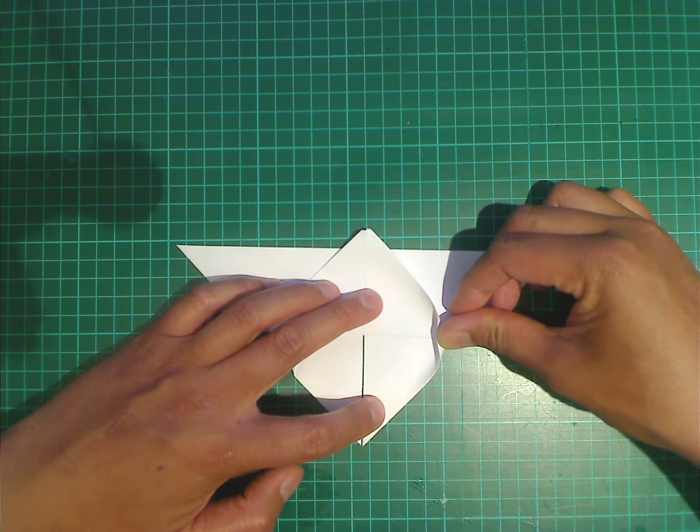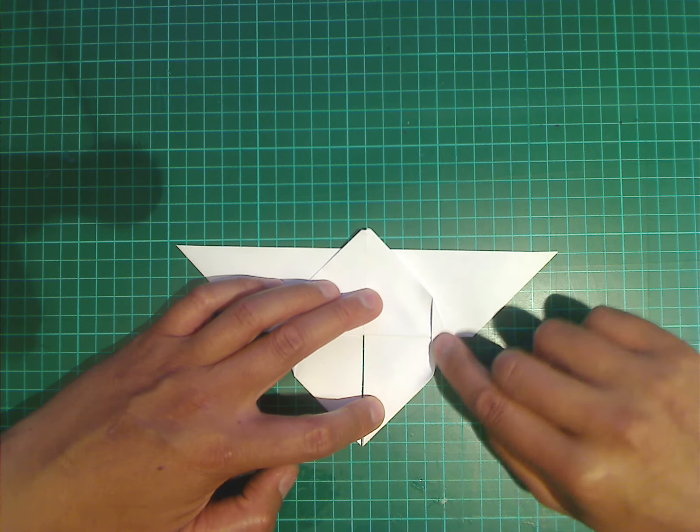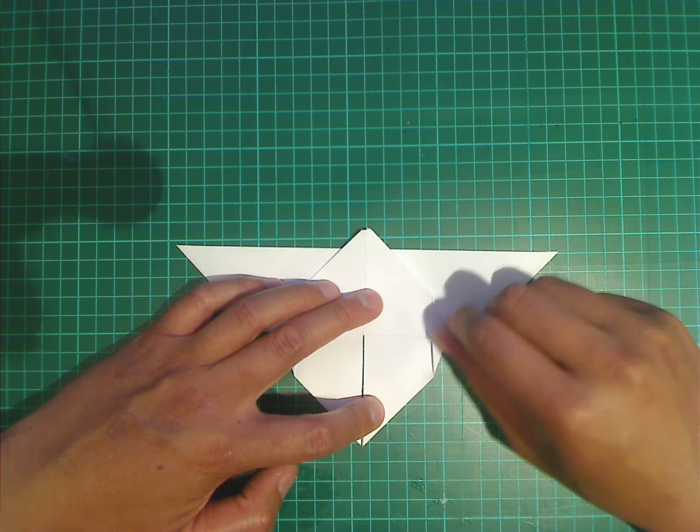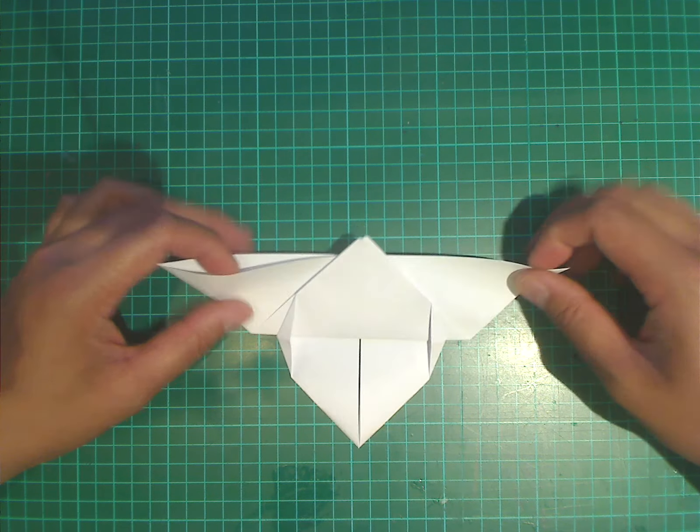And as we flatten it, we'll find that this edge will curl up. And again, once it curls, just push it down and flatten it. We're then going to turn the model over again.